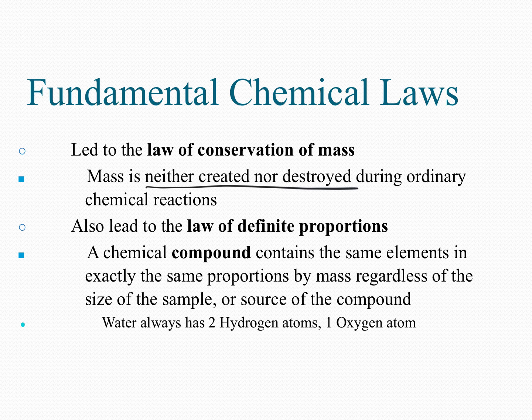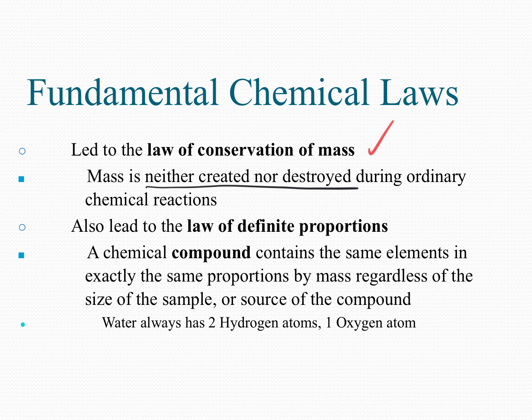The law of conservation of mass tells us that we can't bring atoms from nowhere, and atoms don't disappear to nowhere. In a chemical reaction, atoms don't appear or disappear — they just rearrange themselves. So in a chemical reaction, we have to satisfy the law of conservation of mass. That means if I put four hydrogens into a chemical reaction, four hydrogens must come out.